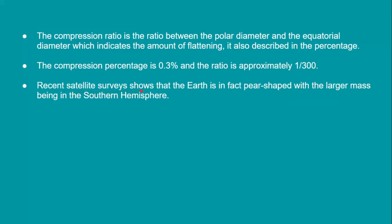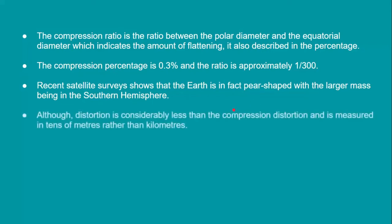Recent satellite surveys show that the earth is in fact pear-shaped, with the larger mass being in the southern hemisphere — more mass in the southern hemisphere and less mass in the northern hemisphere. Although this distortion is considerably less than the compression distortion, and is measured in tens of meters rather than kilometers. The pear-shape distortion is very small compared to the 43 km difference between the polar and equatorial diameters.